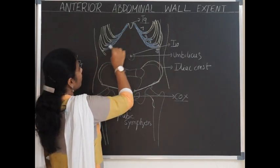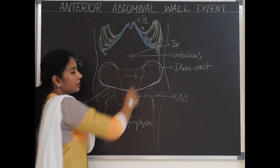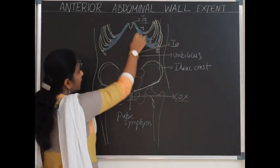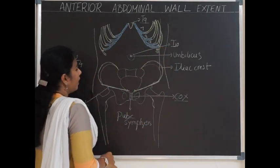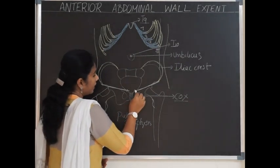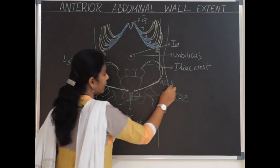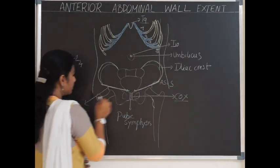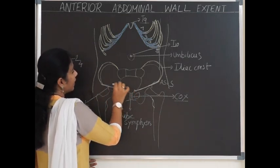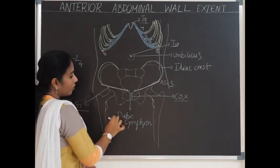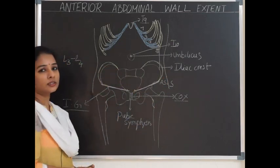Superolaterally, the lower margins of the costal cartilages of the 7th, 8th, and 9th ribs join to form the superolateral boundary. Laterally, it extends to the mid-axillary line. Anteroinferiorly, the inguinal ligament connects from the ASIS — anterior superior iliac spine — to the pubic tubercle, separating the anterior abdominal wall from the thigh. Laterally, the boundary is formed by the iliac crest of the hip bone.